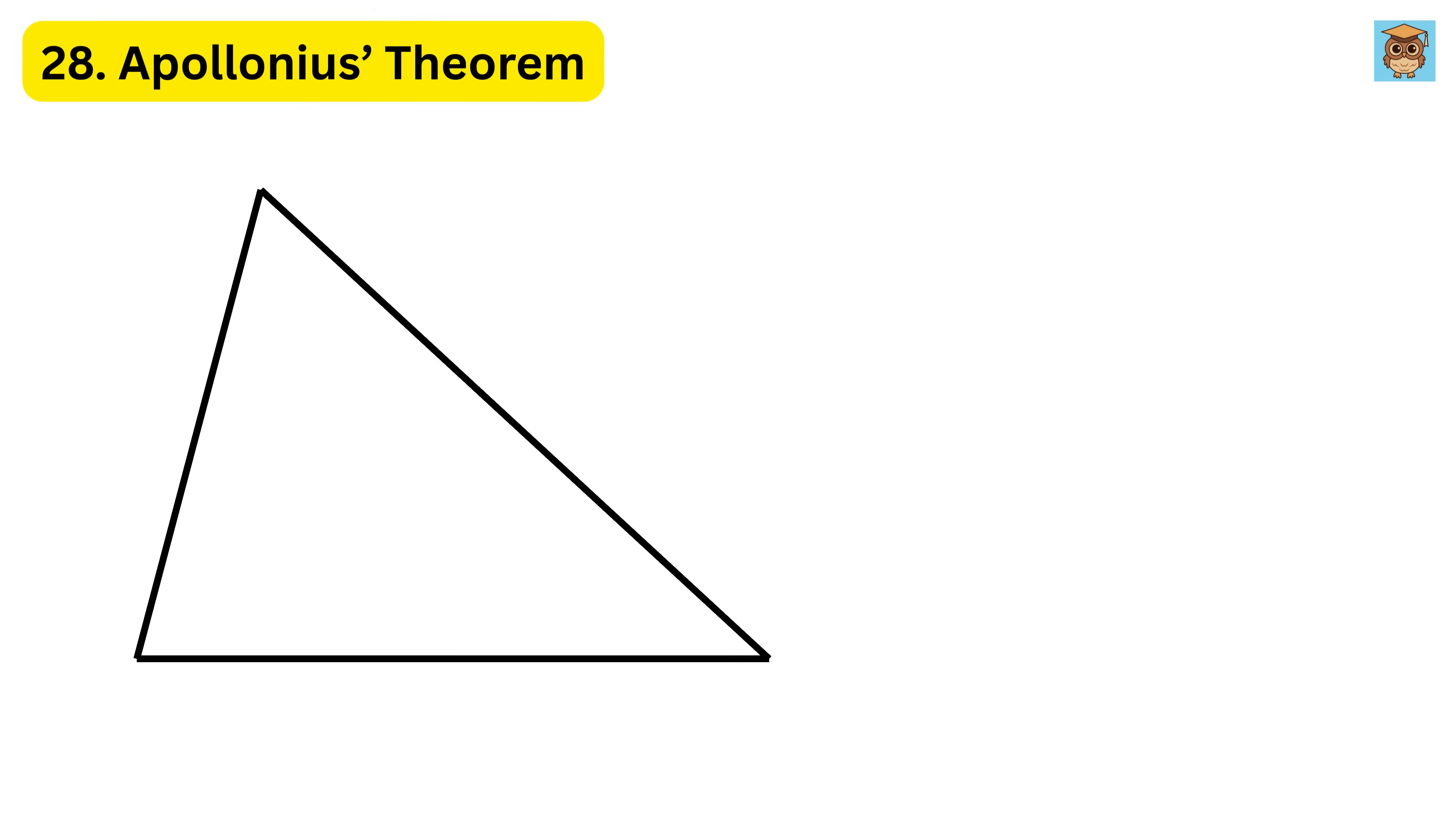28. Apollonius's theorem. It says that if in any triangle of side length A, B, and C, the length of the median to side C is M, then if you take side A times A and side B times B and add them, the total equals 2 times the M times M, plus one half of side C times C.